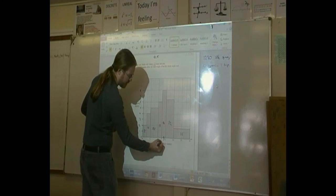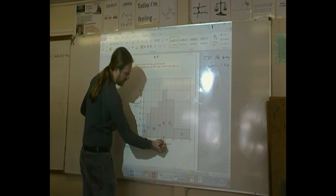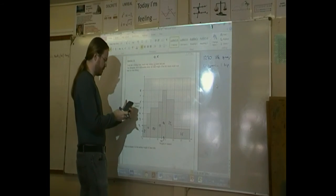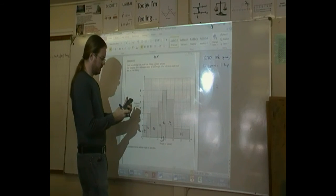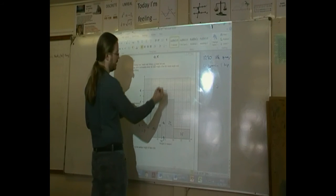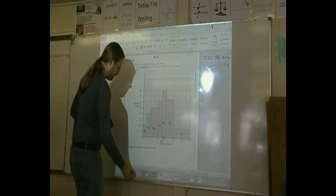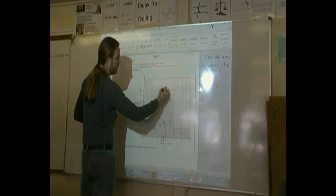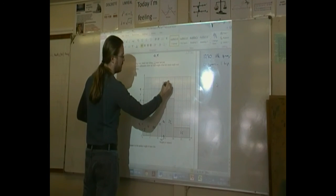So we do 12.5 and 15, and then half it. And we get 13.75. So the middle of that block here, 13.75.